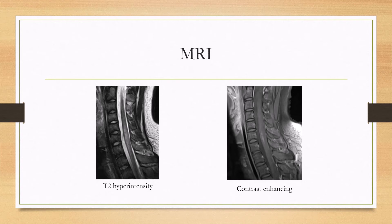On the MRI, you can see T2 hyperintensity right here, and these lesions are typically also contrast enhancing, such as right here.